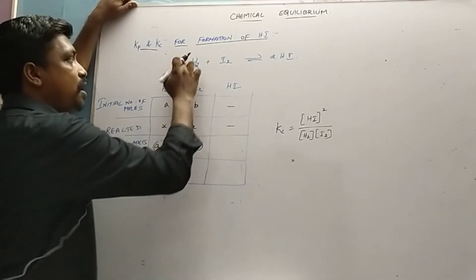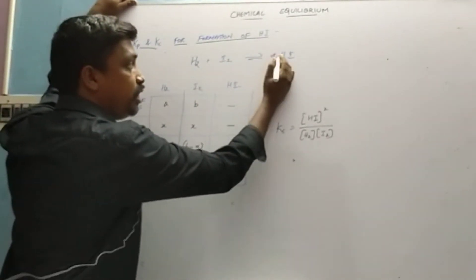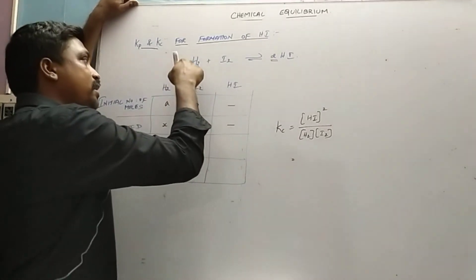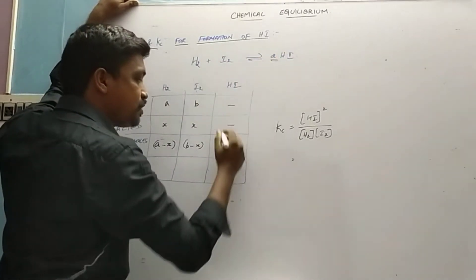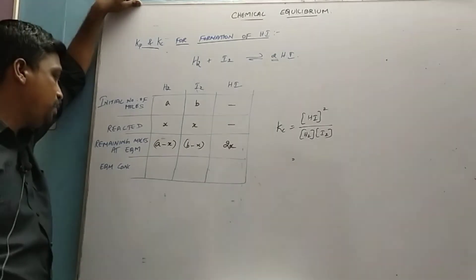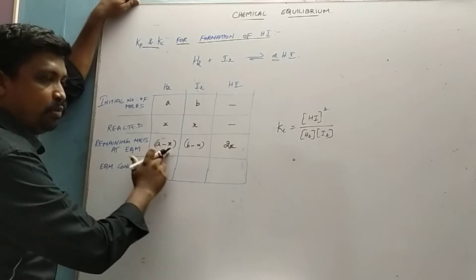One hydrogen combines with one iodine to form two HI. X reacted means x hydrogen reacts with x iodine to form two times x HI. So the amount of HI present at equilibrium will be 2x. Concentration is number of moles by volume.